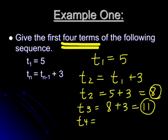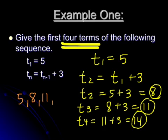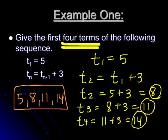Finally, for t₄, we need to take t₃, which is 11, and add 3 to get 14. So it asks us for the first four terms. Your answers are 5, 8, 11, and 14. That's the gist of how the recursive formulas work.